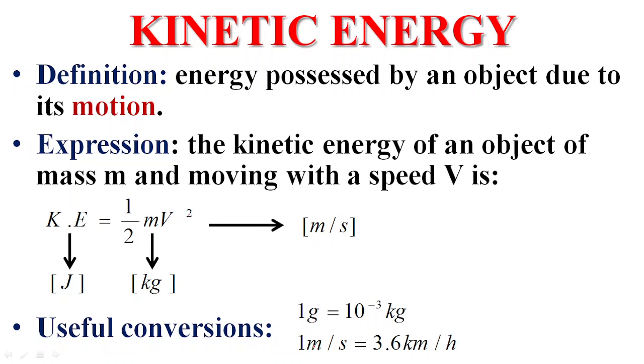Useful conversions: to convert from grams to kilograms we multiply by 10 power negative three or divide by thousand. To convert from kilometer per hour to meter per second we divide by 3.6.